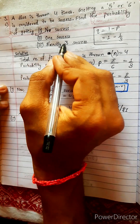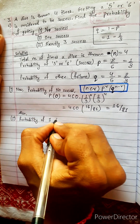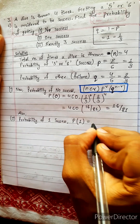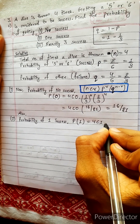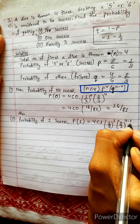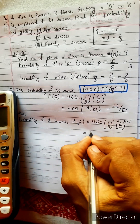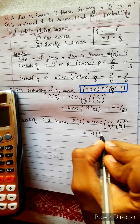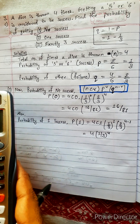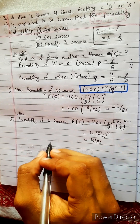In part two, probability of one success. Using the same formula nCr times p power r times q power n minus r: 4C1 is four, one-third power one, two-thirds power three. The result is four by eighty-one.